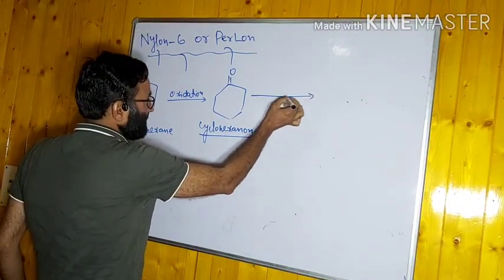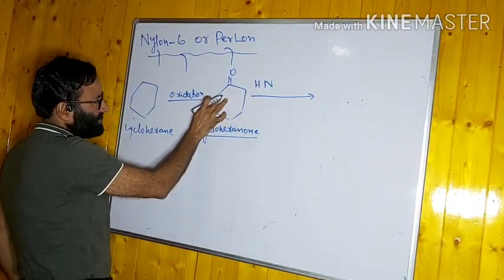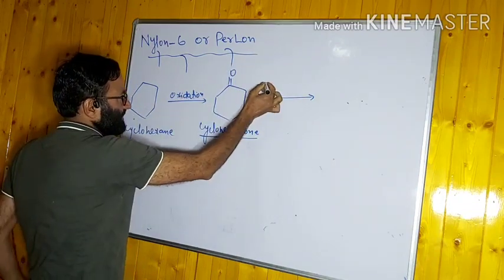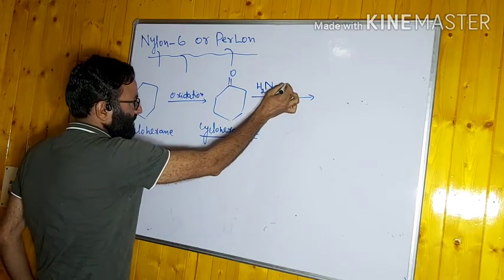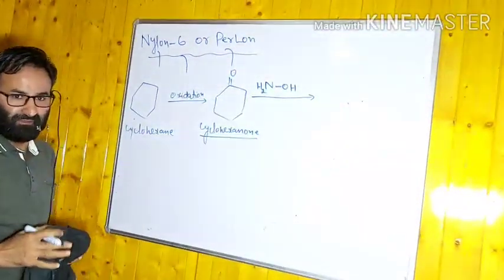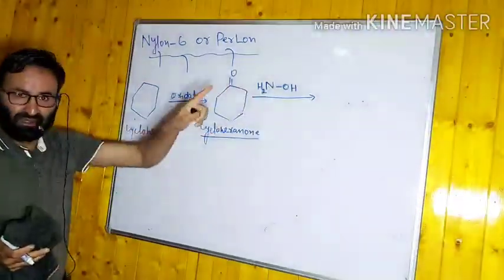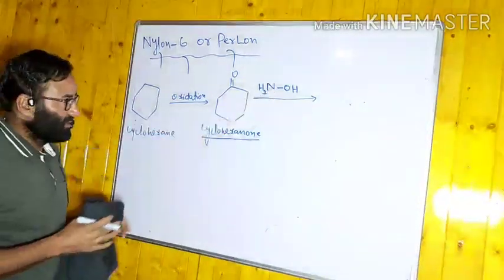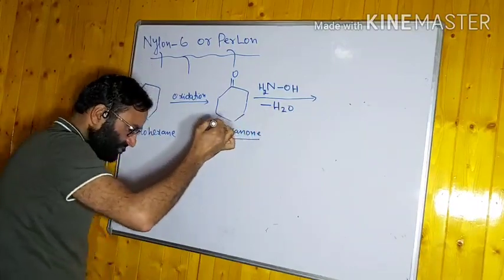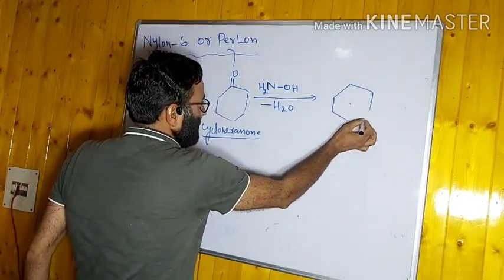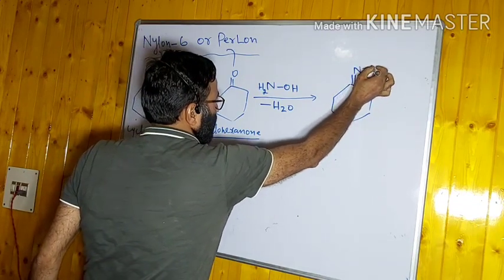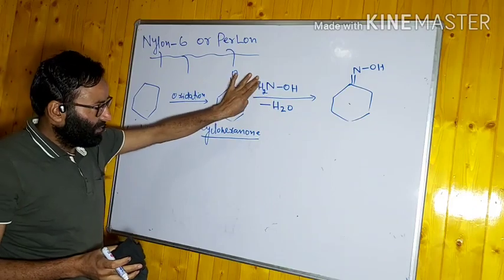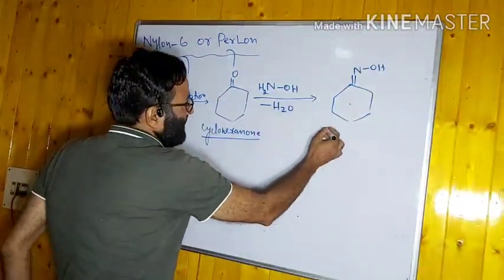Cyclohexanone is treated with hydroxylamine. We have already discussed the reaction of aldehydes and ketones with hydroxylamine — it is an ammonia derivative. In this reaction, water is eliminated, the carbon forms a bond with nitrogen, giving cyclohexanone oxime (NOH). When you treat an aldehyde or ketone with hydroxylamine, the product is known as an oxime.